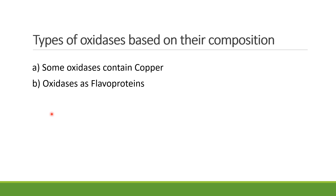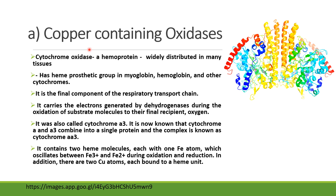Based upon their composition, oxidases are classified into several categories — some contain copper and some contain flavoprotein. Copper-containing oxidases include cytochrome oxidase, which is a hemoprotein widely distributed in many tissues, with a characteristic prosthetic group similar to myoglobin, hemoglobin, and cytochromes. Cytochrome oxidase is the final component of the respiratory transport chain in the mitochondria.